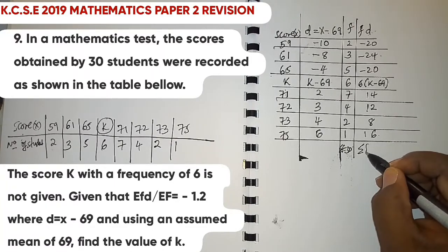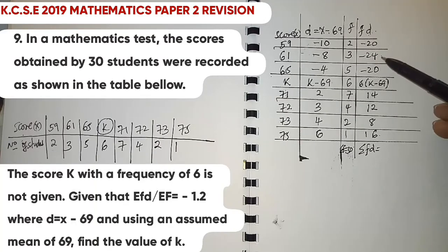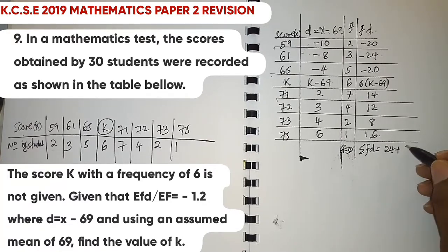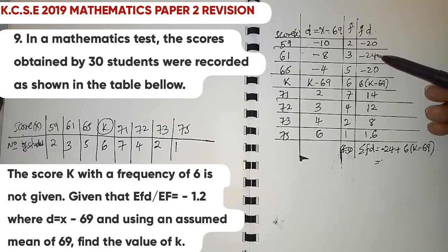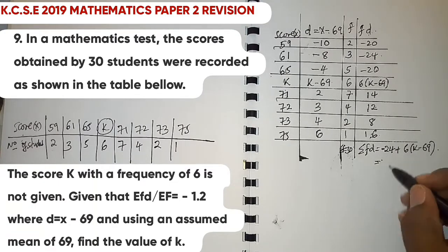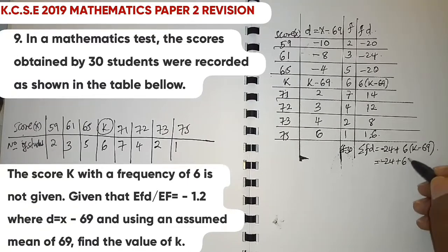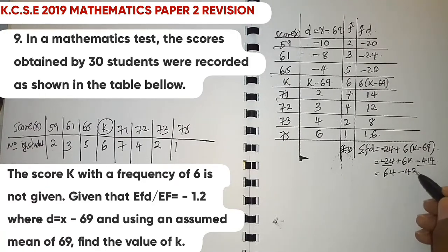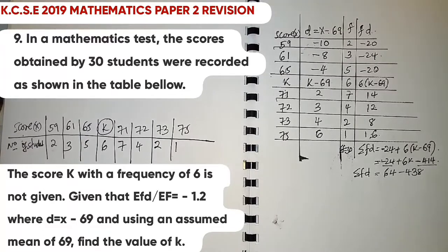Summing the known fd values: -20 + (-24) + (-20) + 14 + 12 + 8 + 6 = -24. So the total summation of fd = -24 + 6(k - 69) = -24 + 6k - 414 = 6k - 438.